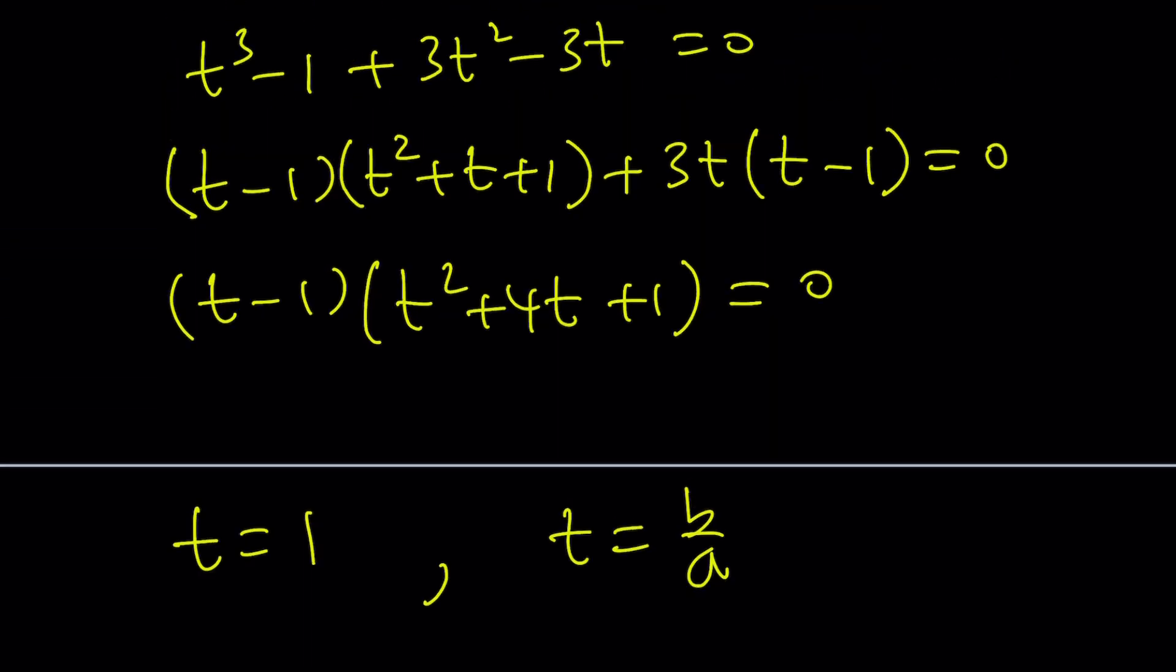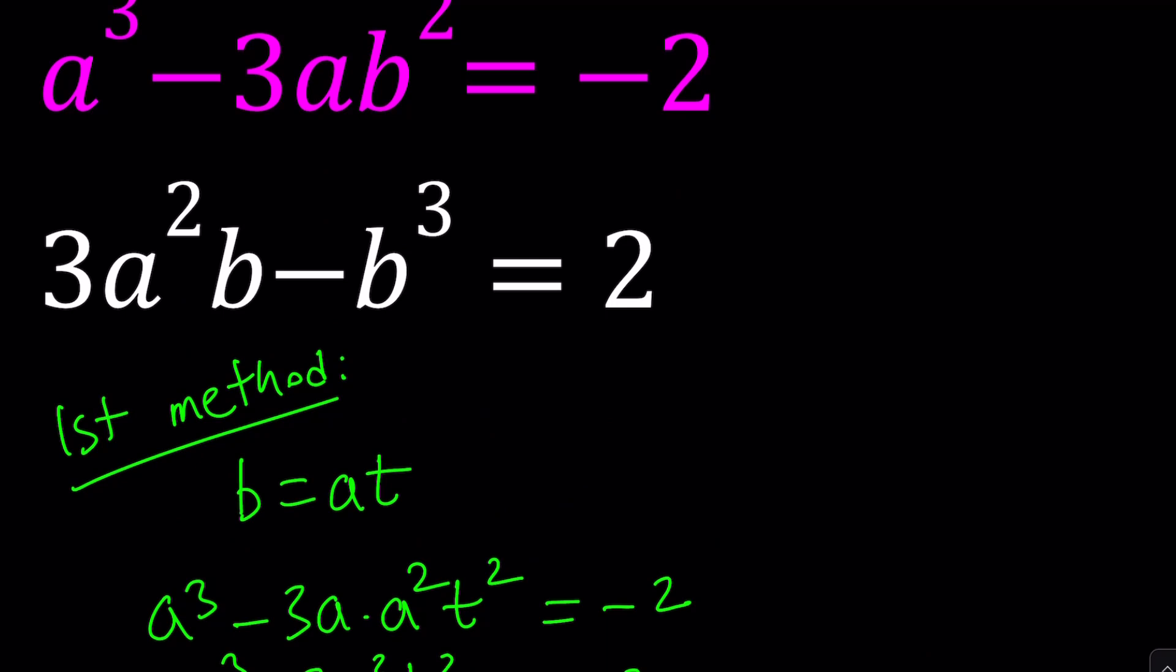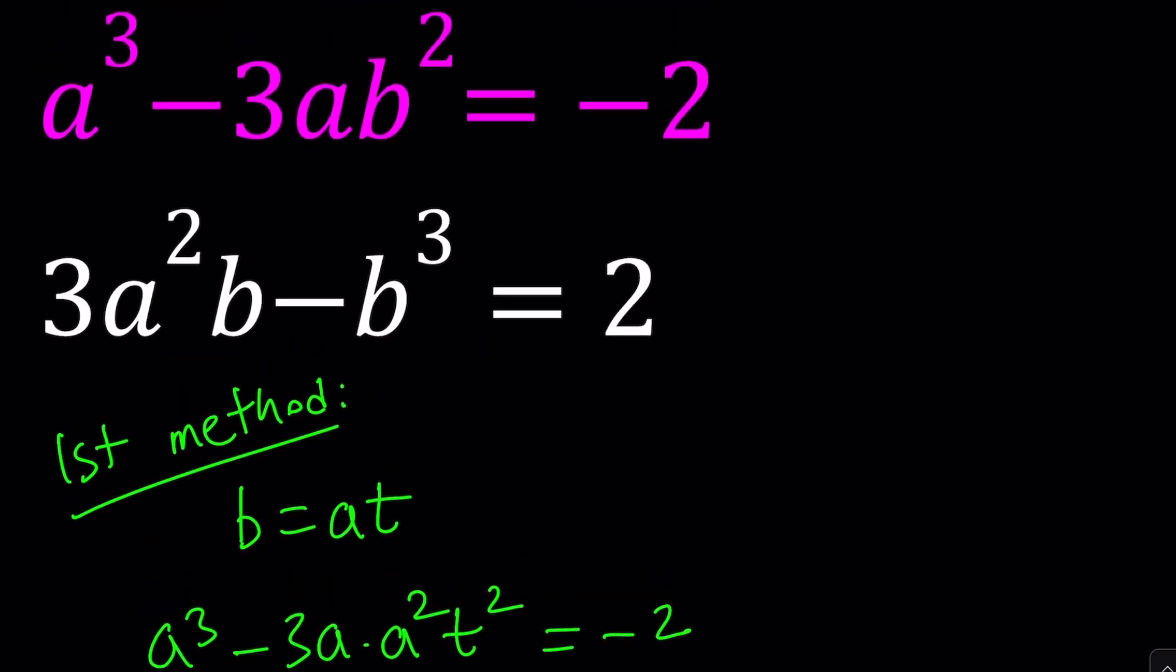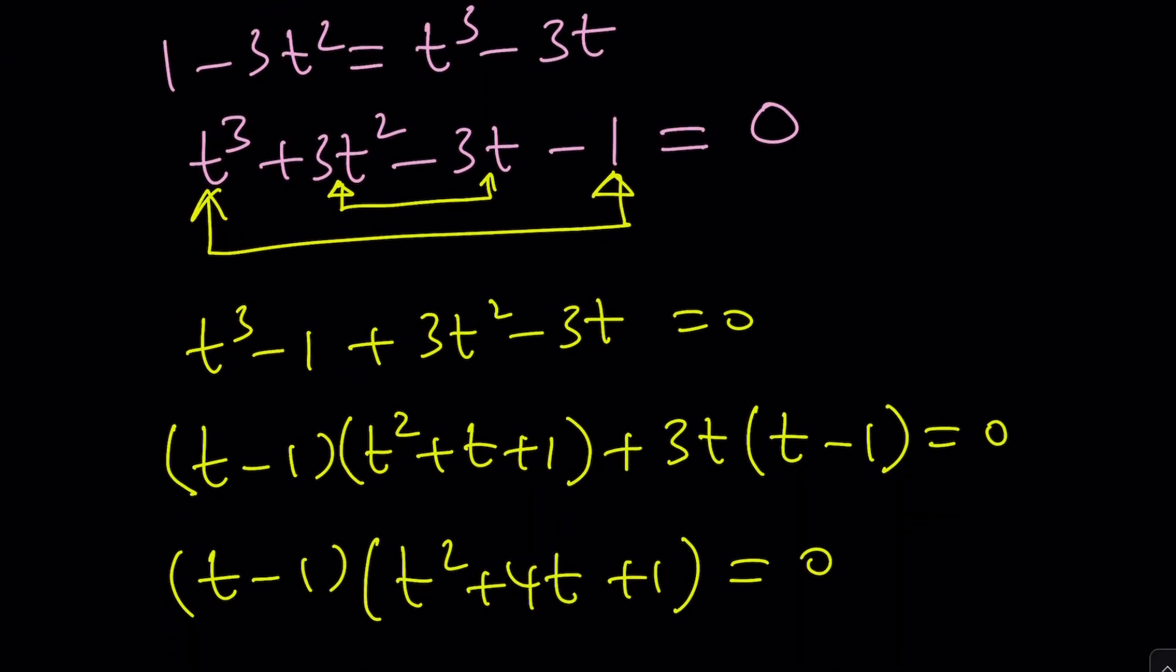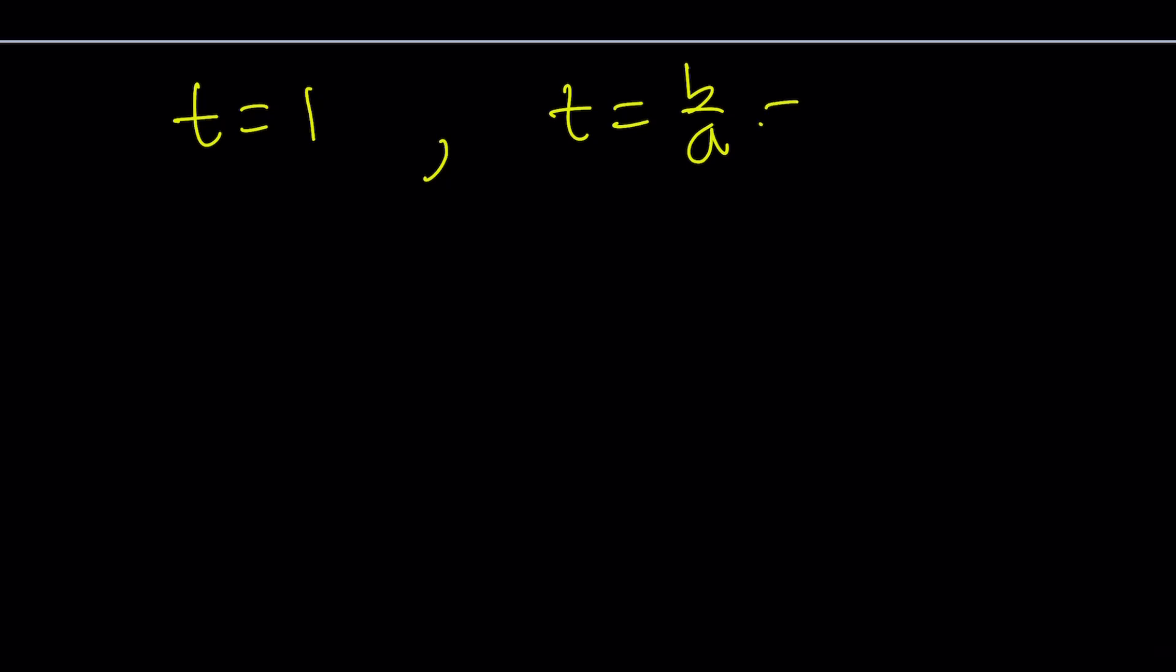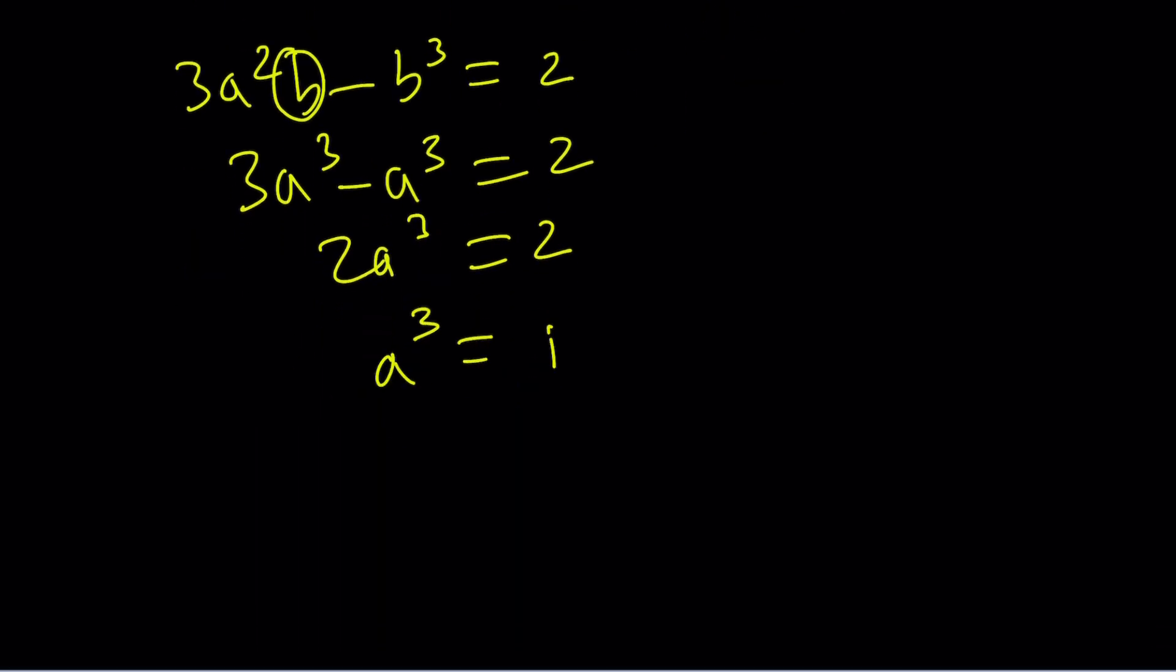Remember, a should not be 0. If a is 0 in the original problem, you get a false equation since 0 ≠ -2. For the same reason, b can't be 0 either. So b/a = 1 implies b = a. Substituting into 3a²b - b³ = 2: 3a³ - a³ = 2, so 2a³ = 2, a³ = 1, and a = 1 (for real solutions). Since a = b, we get (1, 1) as a real solution pair.